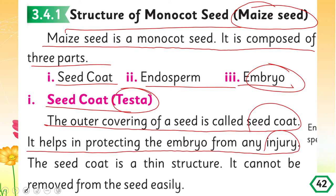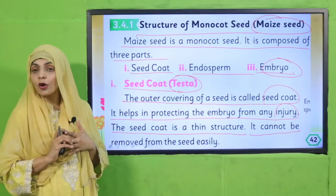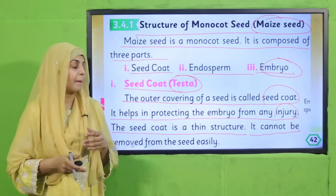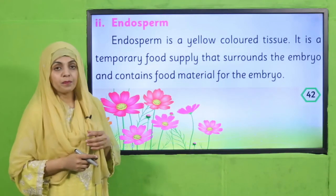The seed coat protects the internal structures of the seed. It is a thin structure and cannot be removed from the seed easily. In the next lecture, I will show you how we can remove it. Next is the endosperm.